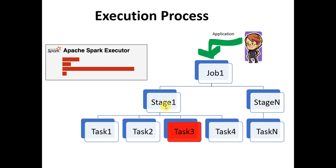Let us assume in this particular application, there is a stage one and we are supplying unevenly distributed partitions — one particular partition is bigger than others. Within each stage, a task would be created. As per Spark architecture, each core within an executor will pick one particular partition — and these partitions are not shareable across cores. So each core picks one particular partition and starts processing it; that is called a task.